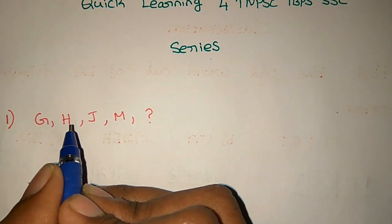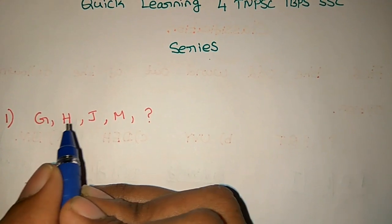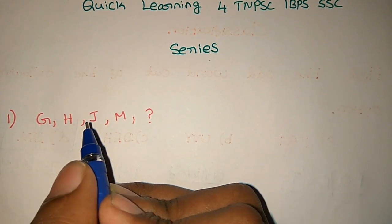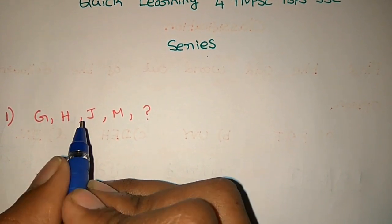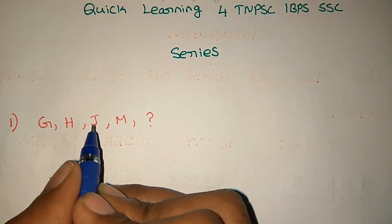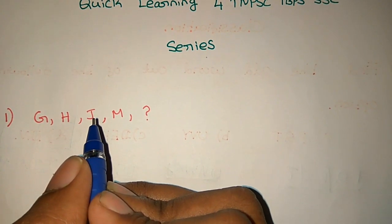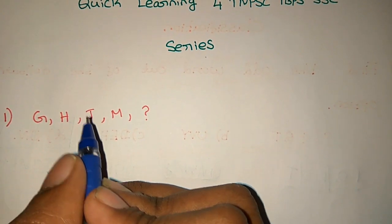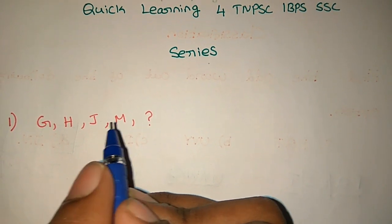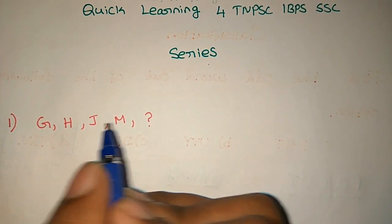If you add H, then you add H. What is H? H equals I. So you add I, then you add J. What is J equals J? K, L. So K equals L.